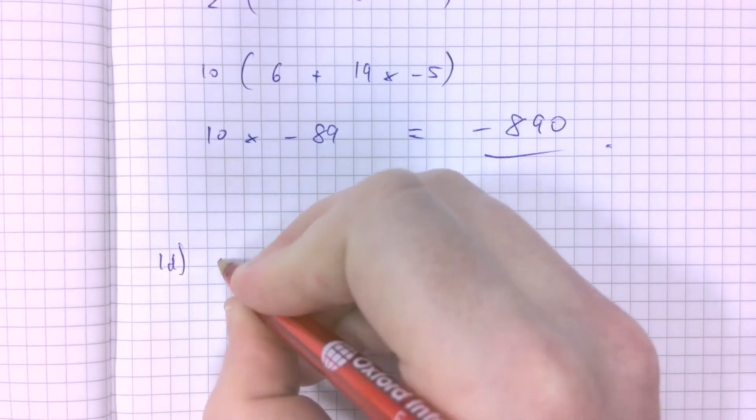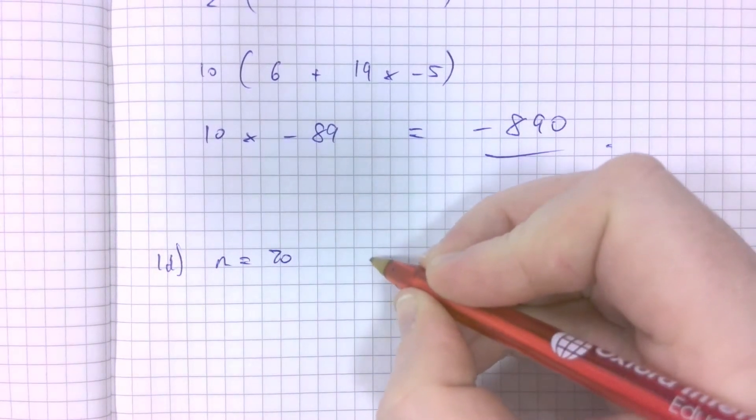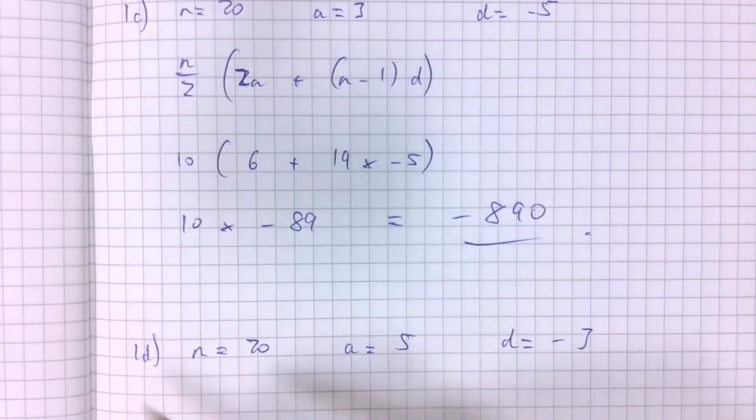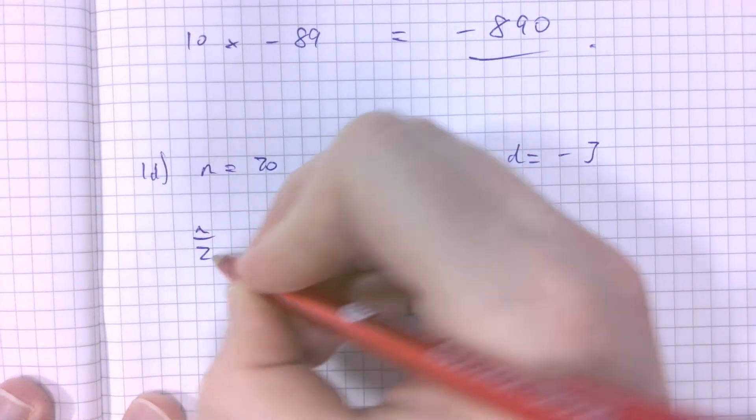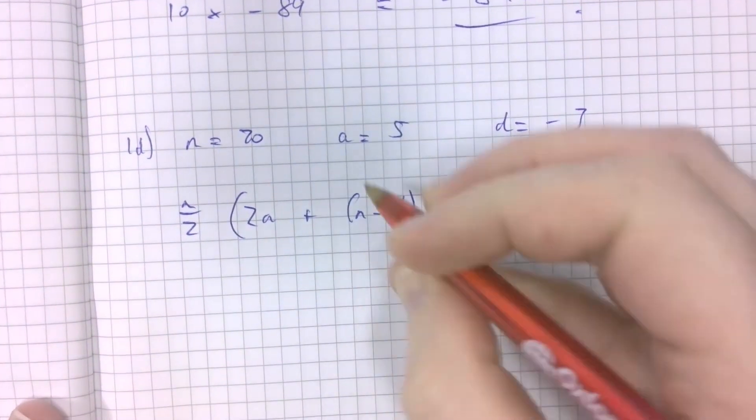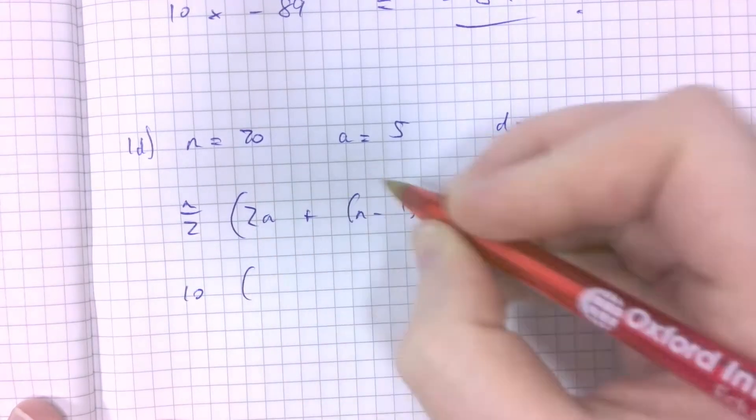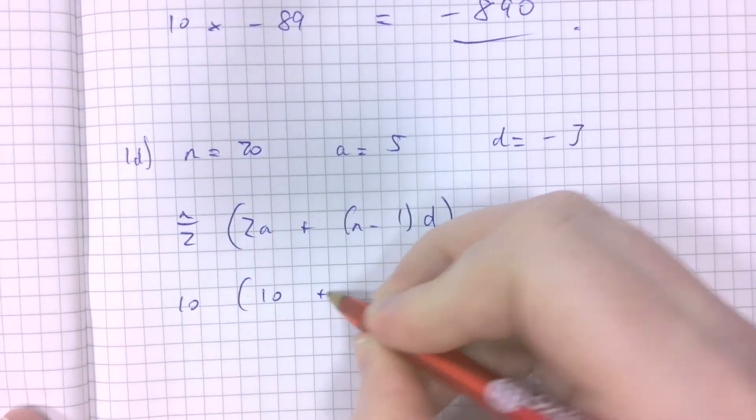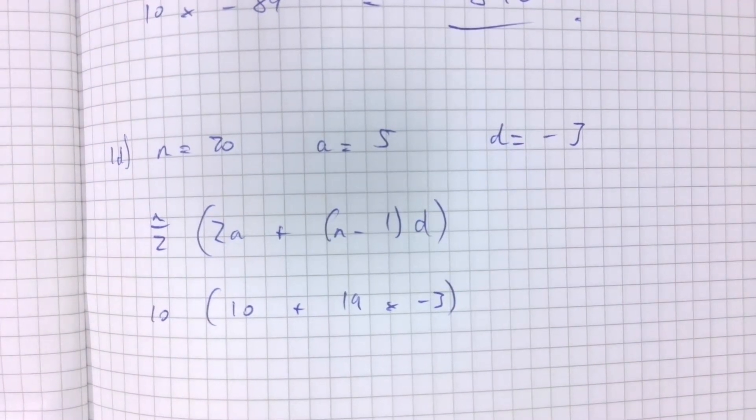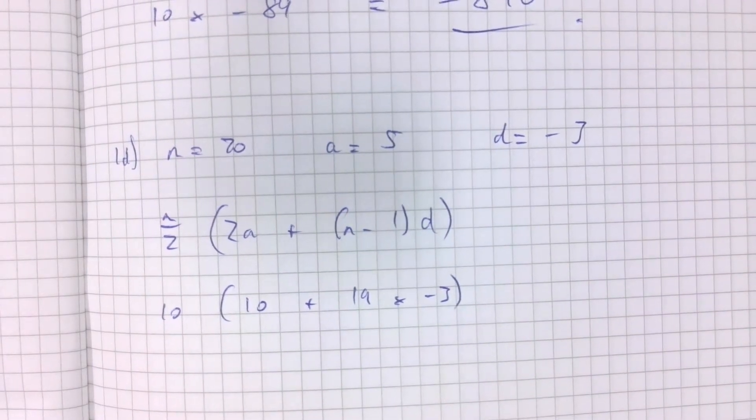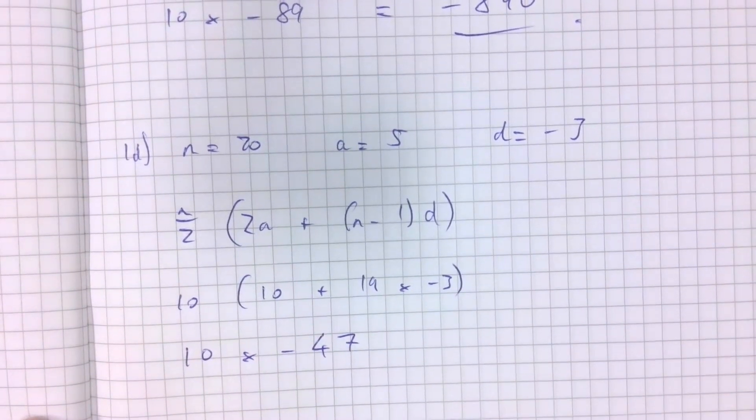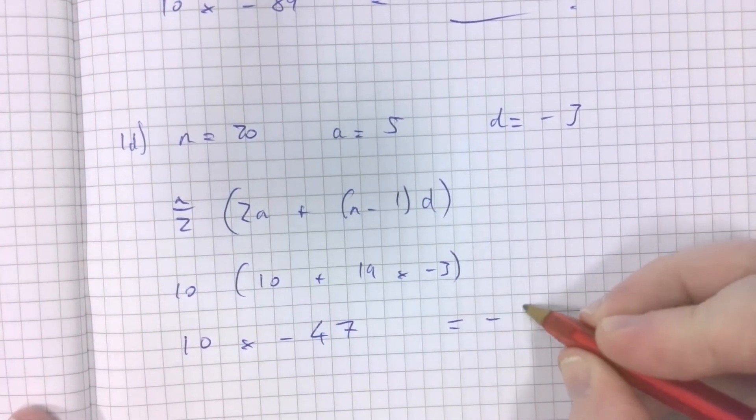1d, similarly. It's the first 20 terms, n equals 20. The first term is 5, the common difference is negative 3. It's exactly the same exercise, same formula, the numbers have changed. So 20, that's going to be 10. 2 times 5, that's 10. 20 take away 1 is 19 times minus 3. 19 multiplied by negative 3, negative 57, plus 10, negative 47. It's 10 times minus 47. That makes negative 470.